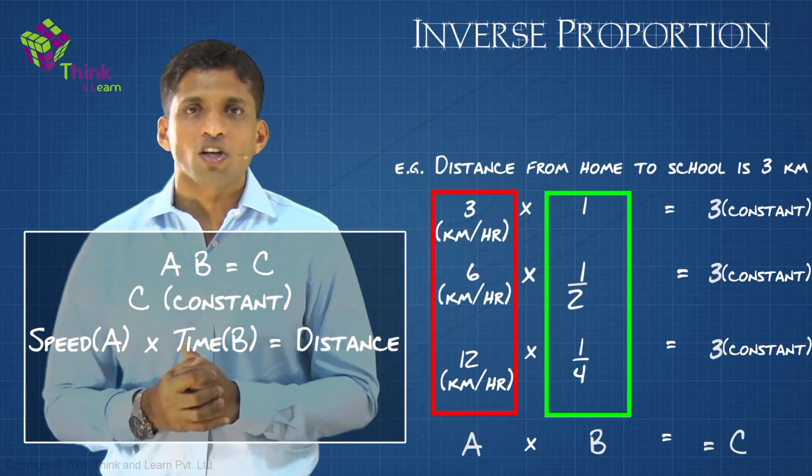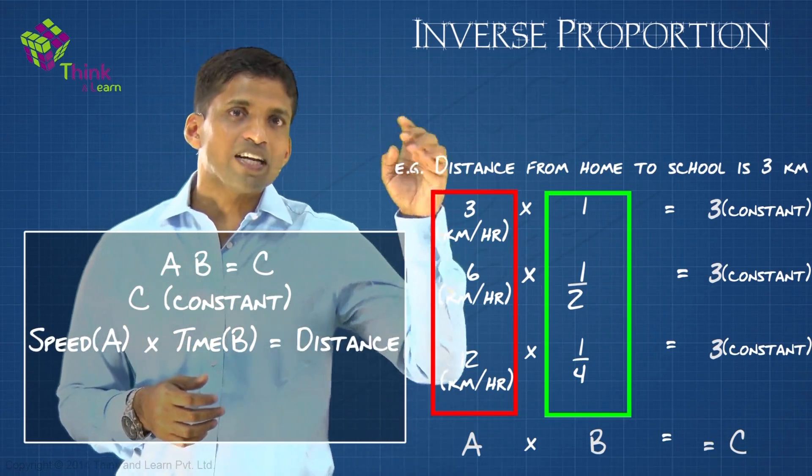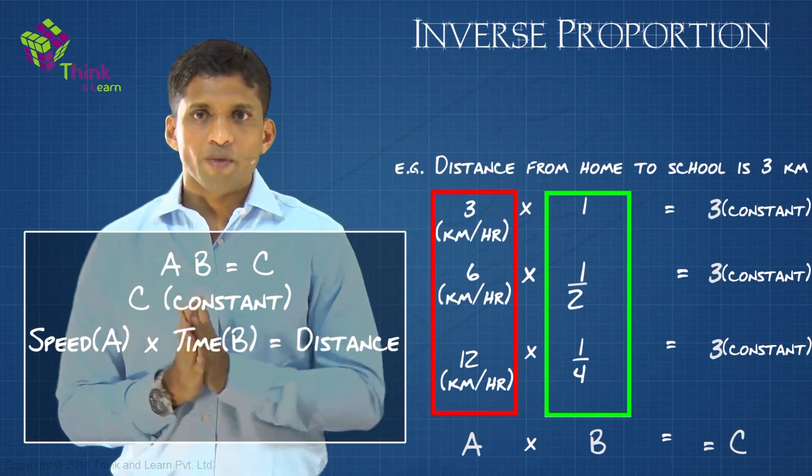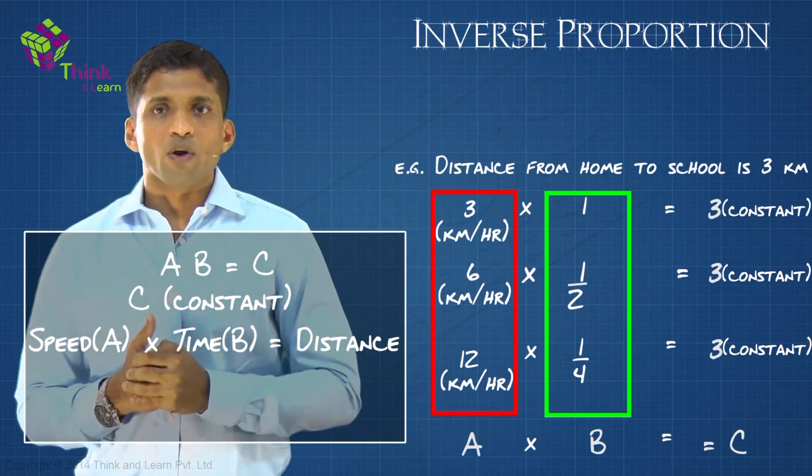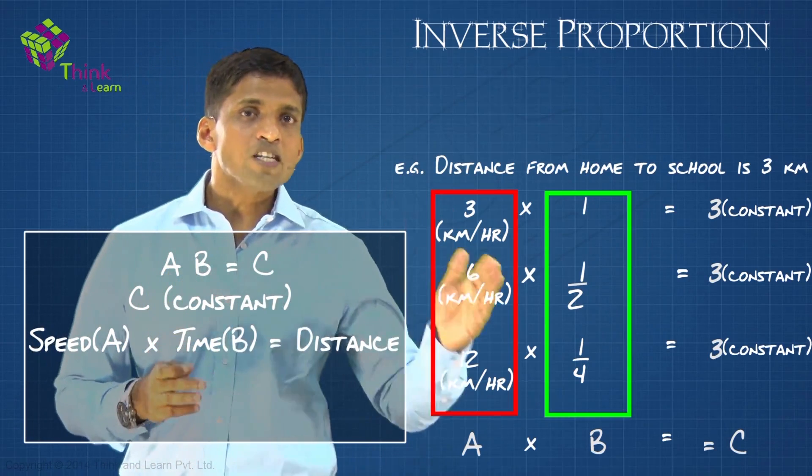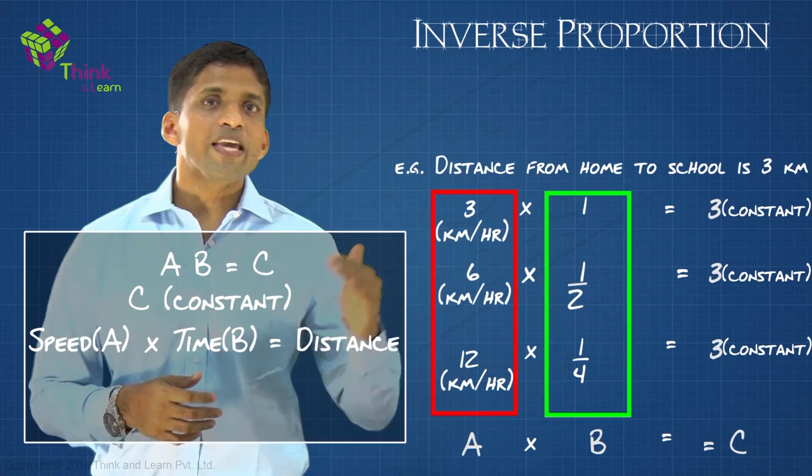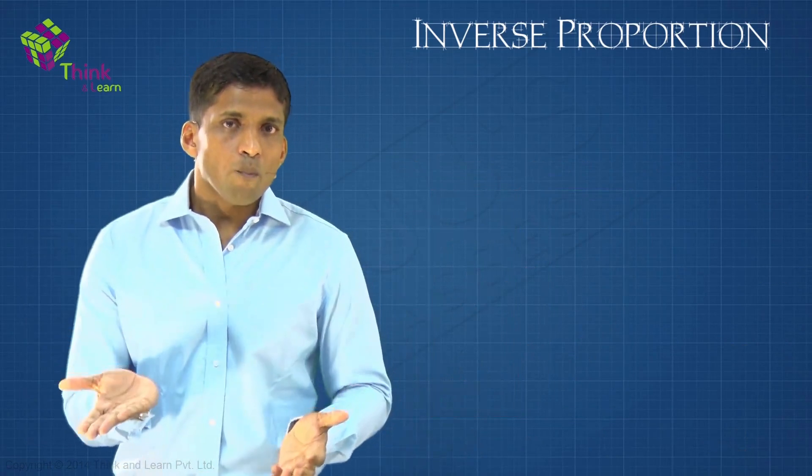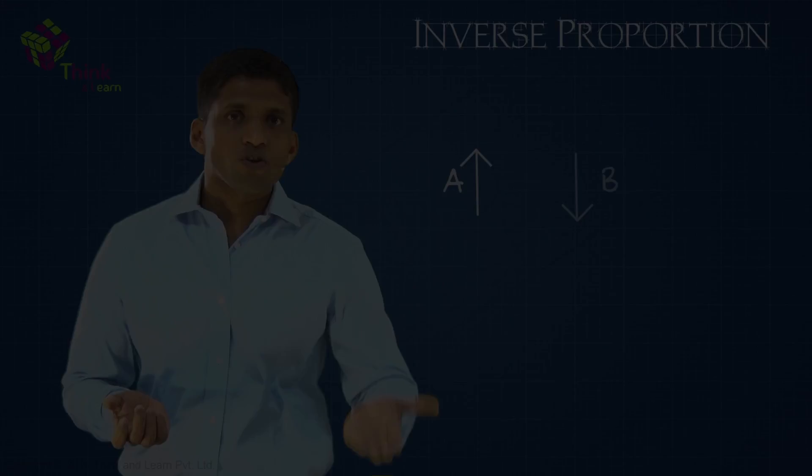In this case, A × B is a constant. I fixed that constant at 3 by fixing the distance from home to school at 3. So A and B are said to be in inverse proportion if A × B is a constant, and that is when more of A is less of B.